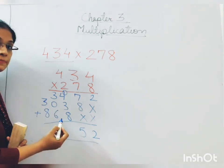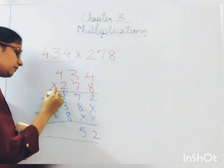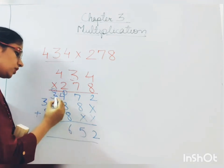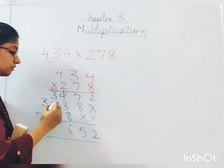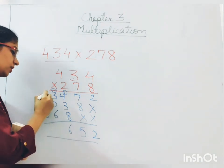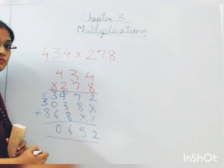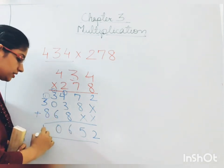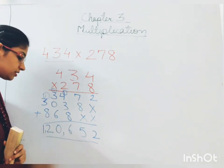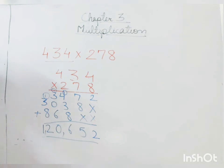8 plus 8 will be 16. So 1 above and 6 down. 1 plus 3 will be 4. 4 plus 6 will be 10. So 1 above and 0 down. 1 plus 3 will be 4. 4 plus 8 will be 12. So the answer is 1,20,652.